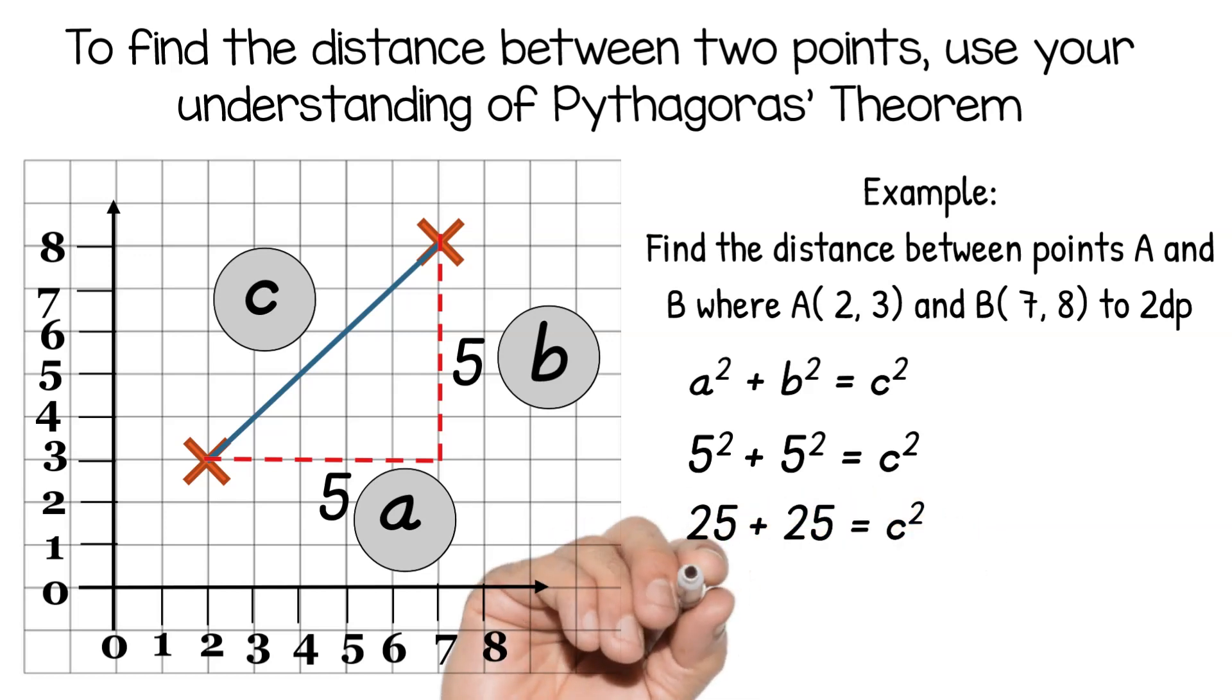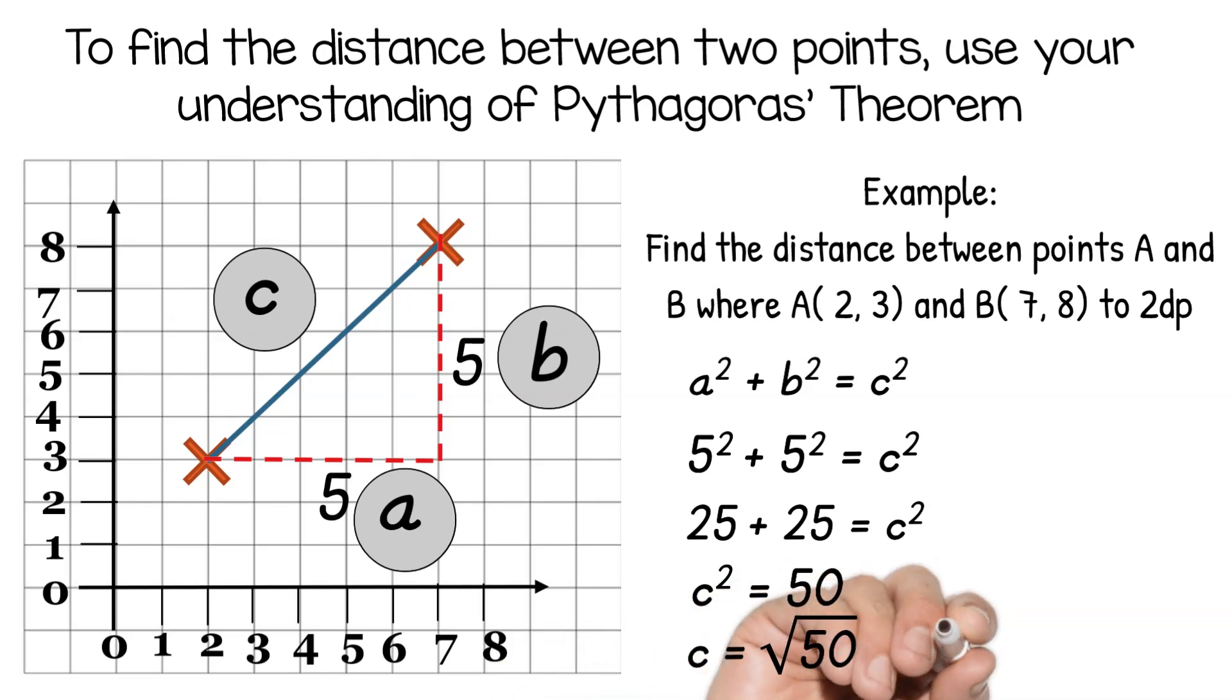So to find C, because we have c² at the moment, you just need to square root of C value. So the value of C, the distance between these two points, is the square root of 50. The question asked to 2 decimal places, so C is 7.07.